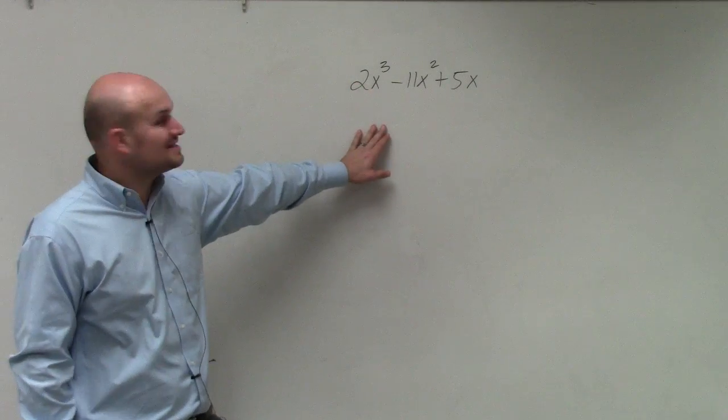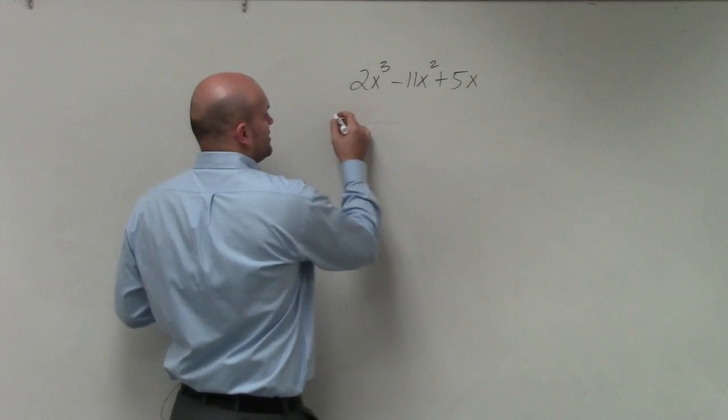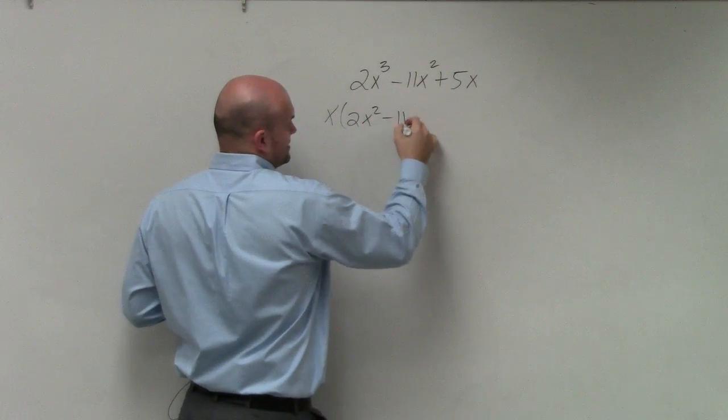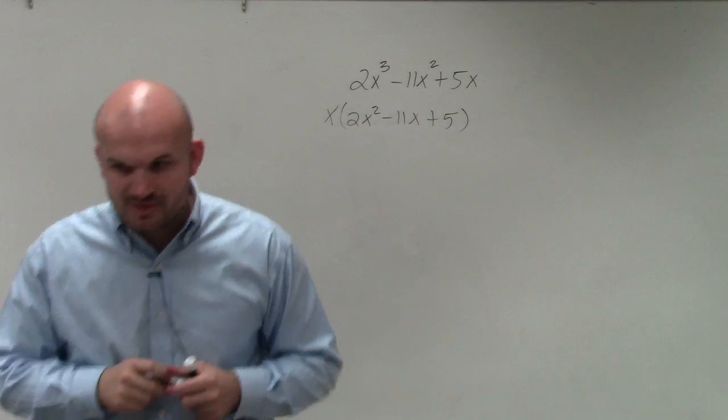You can see in this example that each of my three terms all share an x, right? So I can factor out an x. If I factor out an x, I'm now left with 2x squared minus 11x plus 5. Does everybody see that?